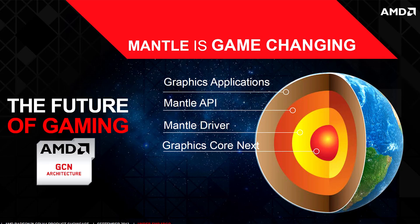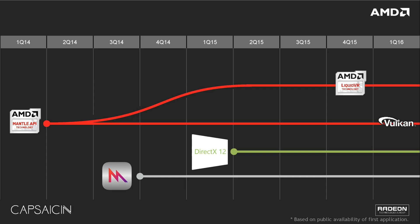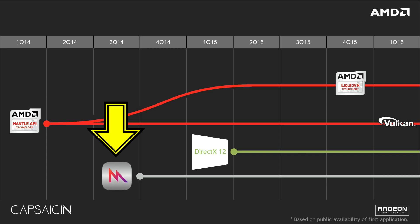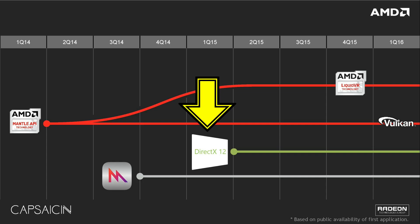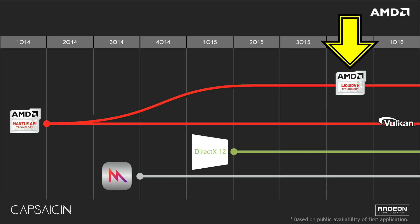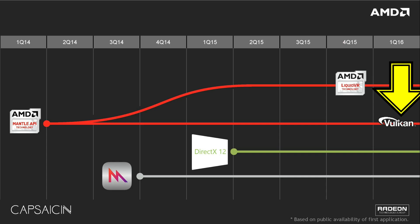Now I'll mention Vulkan. From AMD's recent Capsaicin event slide, starting at the left, Mantle was in Q1 2014. In Q3 2014 we can see Metal, the low-level API developed by Apple for iOS. Then DirectX 12 a whole year after Mantle. Up at the top right we can see Liquid VR, which is based on Mantle — not a lot of people realise that. Finally, in Q1 2016, Vulkan was released. With the red lines on that slide, you can see that at a low level, Vulkan and Mantle are essentially the same thing.